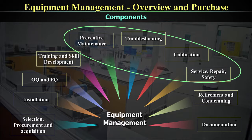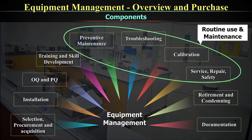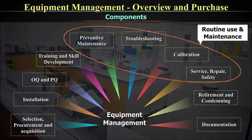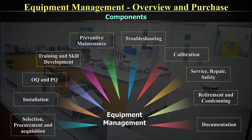The second cluster can be called routine use and maintenance, which includes preventive maintenance, troubleshooting, calibration, service, breakdown and repair, and safety. We will talk about each of these in subsequent videos. The last component is the retirement and condemnation of equipment, which is also an important point the lab should understand.